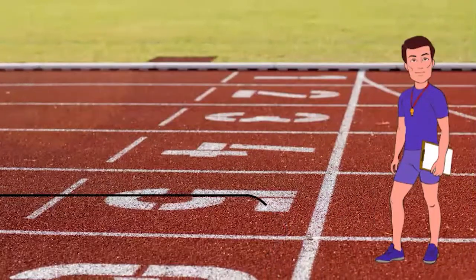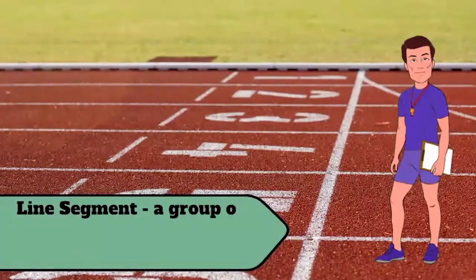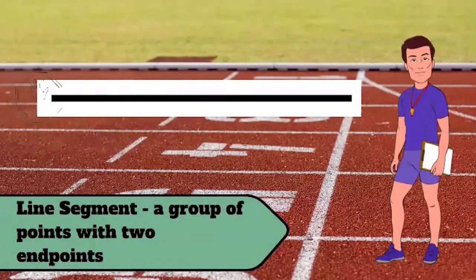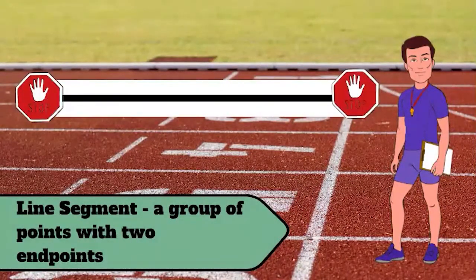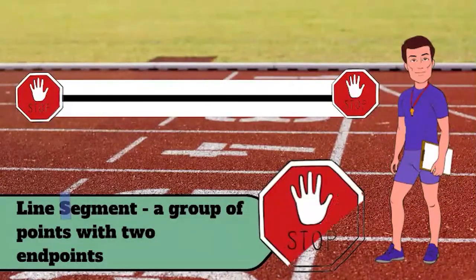The line segment is a group of points with two endpoints. If you look at the word 'line segment,' the S reminds me the line is going to stop on both sides. Line segments stop.